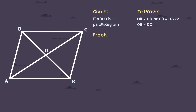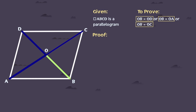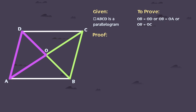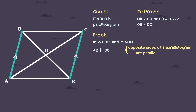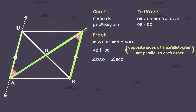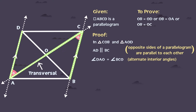Mathematically speaking, we want to determine whether path OB is equal to path OD, OA, or OC. Let's begin by considering the two triangles that contain these line segments. If triangle COB can be shown congruent to triangle AOD, sides OB and OD will also become congruent to each other. Here, we observe that line segment AD is parallel to BC, because opposite sides of a parallelogram are parallel to each other. Besides this, angle DAO is equal to angle BCO, because whenever two parallel lines like AD and BC are cut by a transversal like AC, each pair of alternate interior angles are equal.